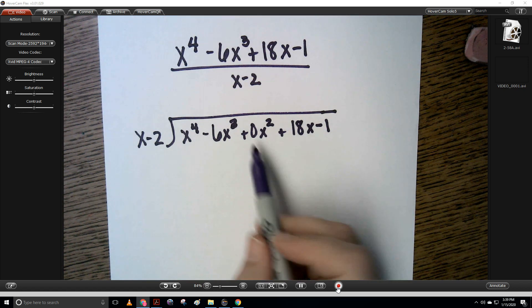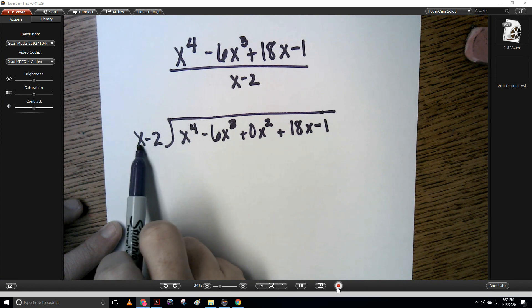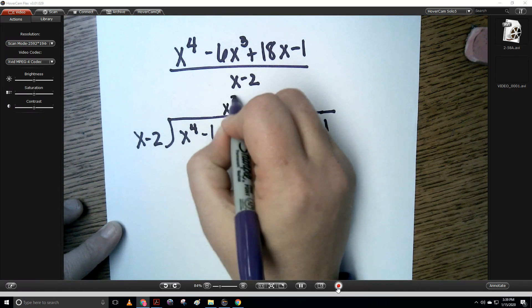I'm ready to use long division. I put the placeholder in and now we're just going to divide the first term by this first term. So x to the fourth divided by x is x cubed.